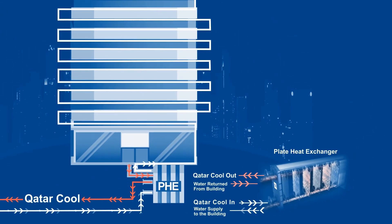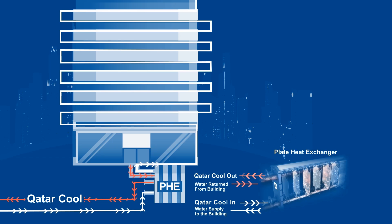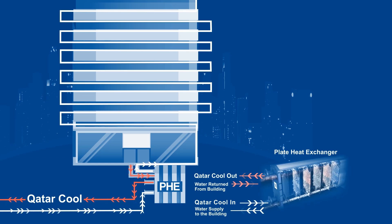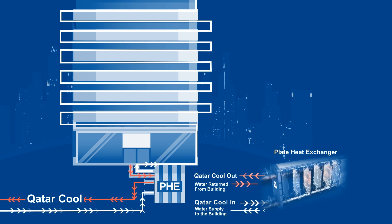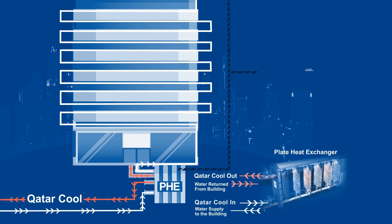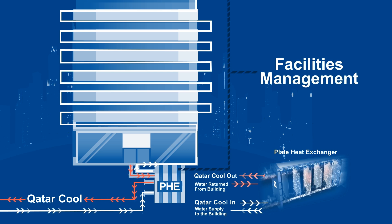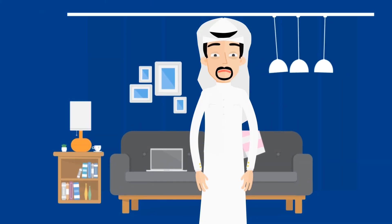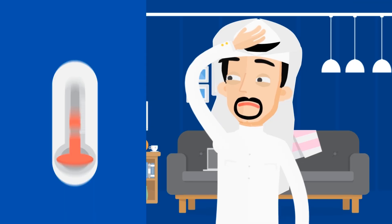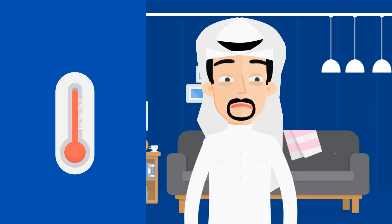The water leaving the fan coil units after dissipating its coldness is returned to the plate heat exchanger to be recooled. Qatar Cool's responsibility is to deliver the chilled water to the plate heat exchanger, then the maintenance and the air conditioning of the building is taken care of through the building facilities management. Each apartment is allocated with a cooling capacity measured in tonne of refrigeration.